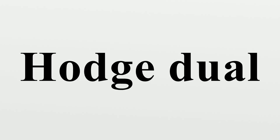This holds for all vector spaces with an inner product, and can be used to explain the Hodge dual. Let V be an n-dimensional vector space with basis, for 0 ≤ k ≤ n. Consider the exterior power spaces Λⁿ. For Λⁿ there is, up to a scalar, only one n-vector — in other words, any element must be a scalar multiple of the basis n-vector for all n.